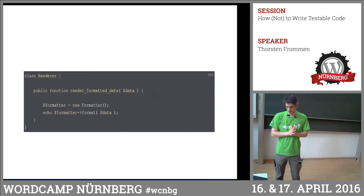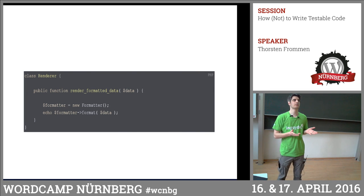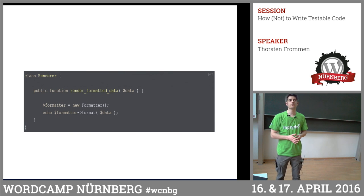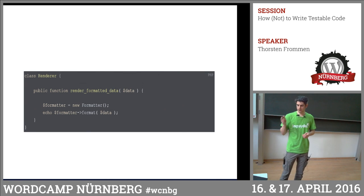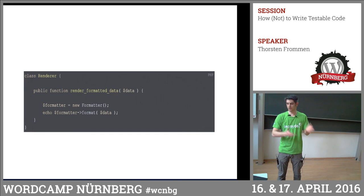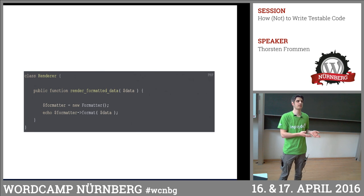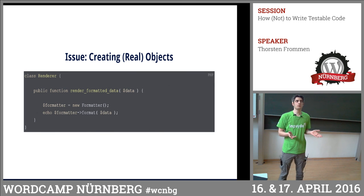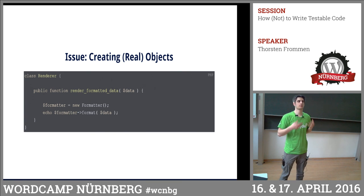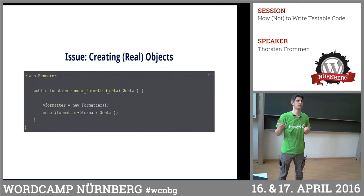Another PHP example: 'render formatted data' is just a wrapper for methods on an object that I'm creating inside the method. The problem is I'm actually executing the real methods on that object, so I cannot mock that. What I could do is in my test autoloader just not load the actual formatter class and provide a stub class — just include what my tests need and return data that I know.